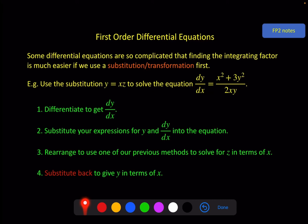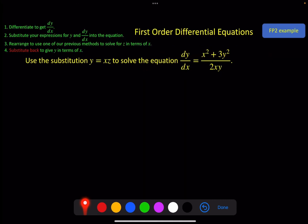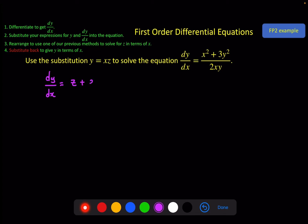So we're going to do this one and then a second example, and that will be the end of the chapter. We have our expression for y, and we need an expression for dy/dx. Since y = xz involves both x and z, we have to use the product rule. Differentiating: we differentiate x to get 1 and leave z, then differentiate z and leave x, giving dy/dx = z + x·dz/dx. We substitute that in along with xz for y.